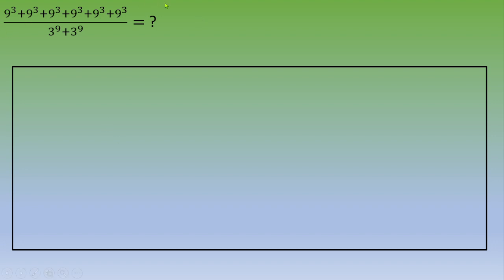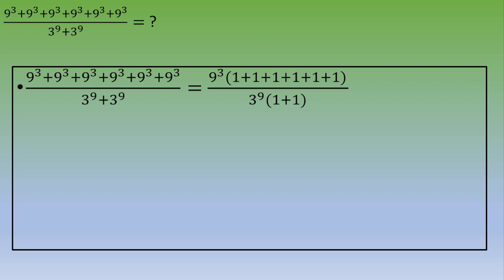We can notice that the numerator is composed of six same terms, so we can factorize. The denominator is composed of two same terms, so we can factorize as well. We get 9 cubed times (1+1+1+1+1+1) over 3 to the power 9 times (1+1).